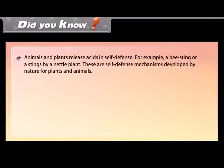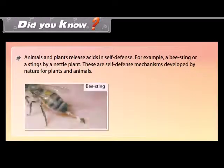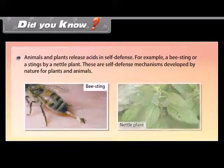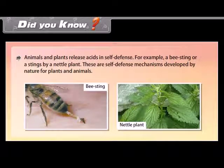Animals and plants release acids in self-defense. For example, a bee sting or stings by a nettle plant are self-defense mechanisms developed by nature for plants and animals.